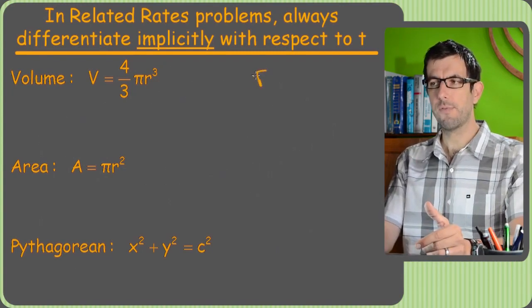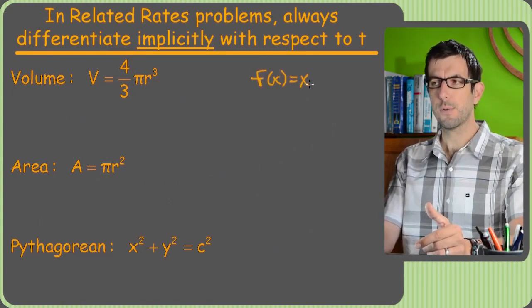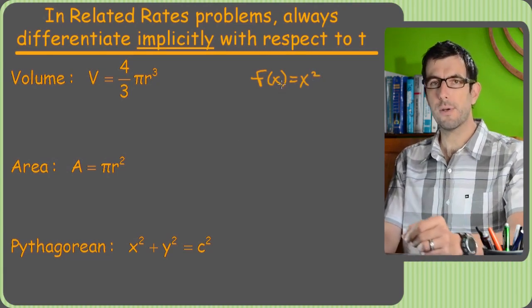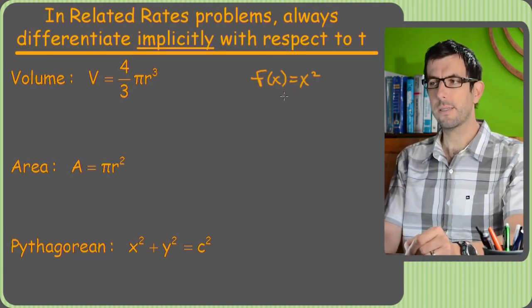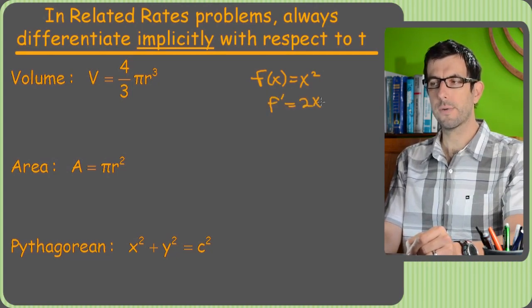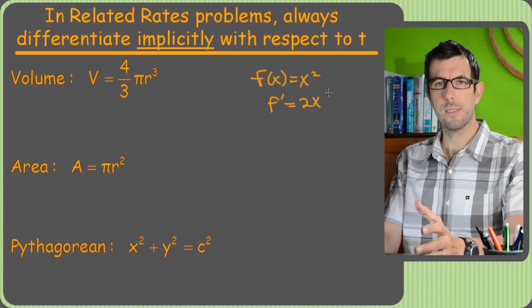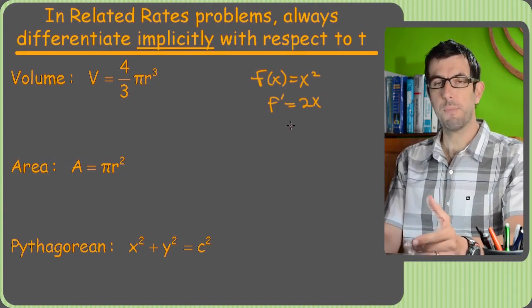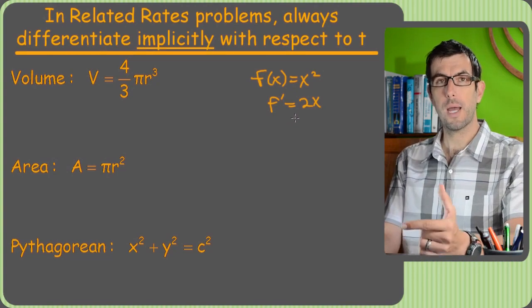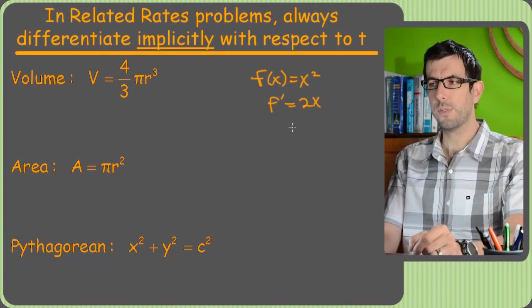And so whenever we take the derivative of an expression, now we're going to be doing it in terms of t, not x. So traditionally, if you had f(x) equals x squared in any previous chapter or even previous section in calculus, the derivative would have been f prime is just 2x, right? The reason there was no d weirdness was because it was all in terms of x. But then in the previous section, we got into implicit differentiation.